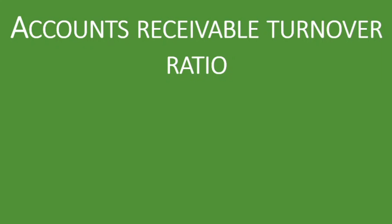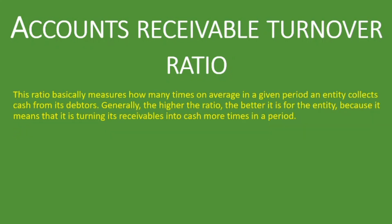Accounts receivable turnover ratio basically measures how many times on average in a given period an entity collects cash from its debtors. It tells you the number of times in a given period it collects money from its debtors. Most likely when you're calculating the accounts receivable turnover ratio, you're calculating it over a period of a year — 365 days or 360 days — so we are calculating how many times it will collect cash from its debtors in one year.